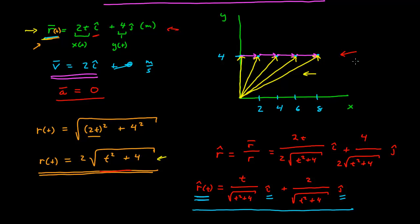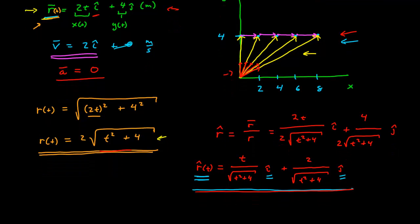Looking back at the graph, we can see what that means. At each point in time, there is a unit vector pointing in the direction of the position vector. At t = 1 the unit vector points in that direction, at t = 2 it points in this direction, and so on for t = 3 and t = 4. As time goes along, the unit vector corresponding to that position vector also changes because the direction is changing.